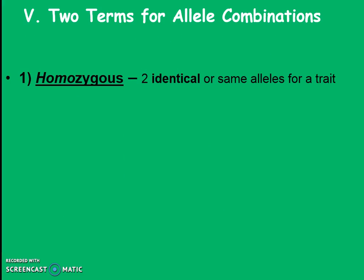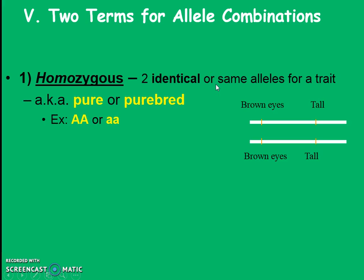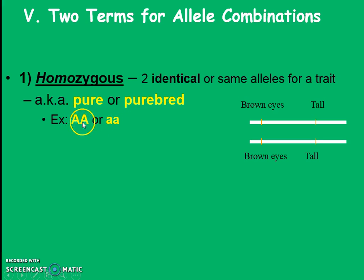We as humans are diploid, so we actually have two copies of each trait — one from our mom and one from our dad — and that makes allele combinations. Our first combination of alleles is called homozygous. The prefix homo means same, so this means two identical versions. I like to call this pure or purebred. We have two examples: homozygous dominant, big A big A, or homozygous recessive, little a little a.